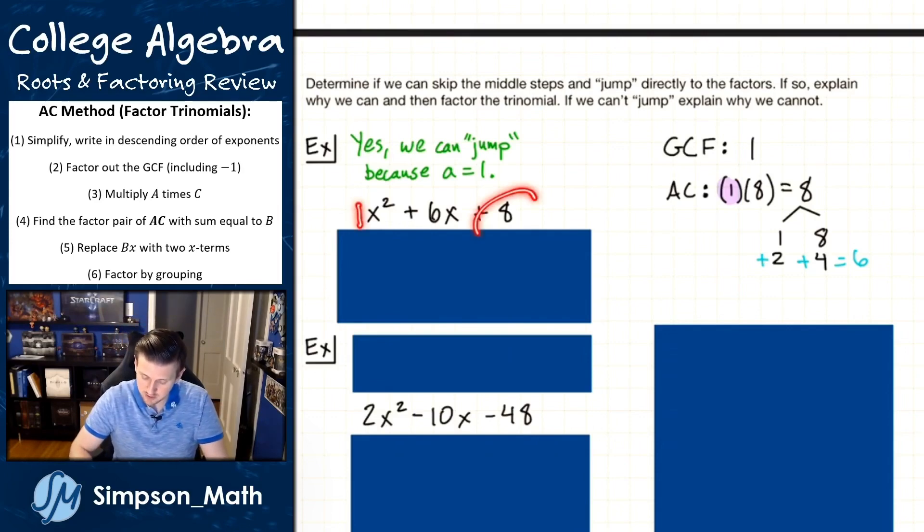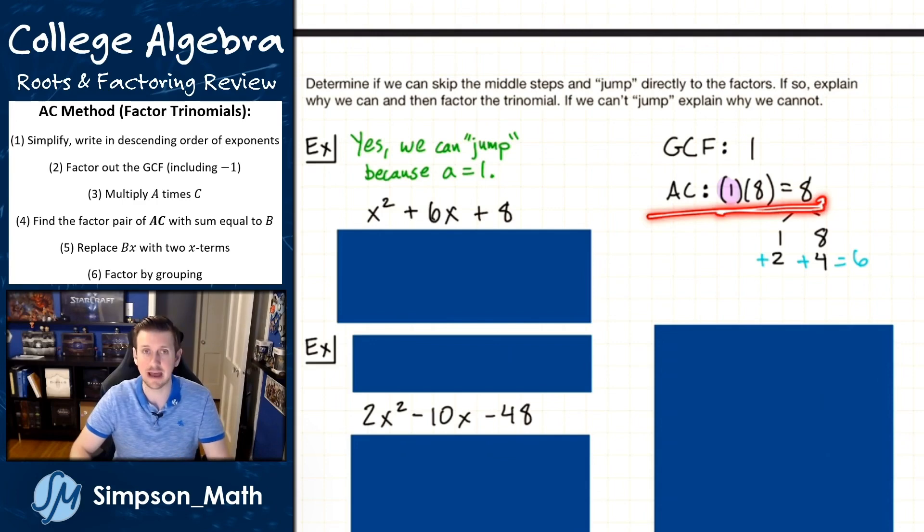So A is one, then multiply times the eight, and our AC is eight. Granted, it is just C, but just keep in the habit of using the AC. So our AC is eight, multiplies to be eight and adds to be six. Well, that's two and four, adds together to be six.